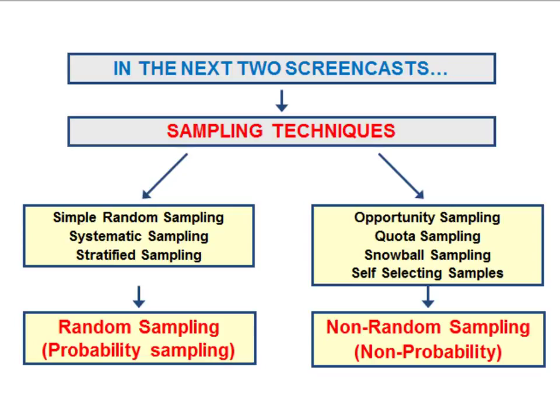Now there might be occasions where random sampling is simply not practical. Where it's not practical to take a random sample, sociologists will have to choose a non-random sampling technique, although the samples used with these techniques are unlikely to be representative.